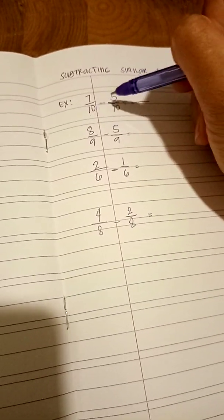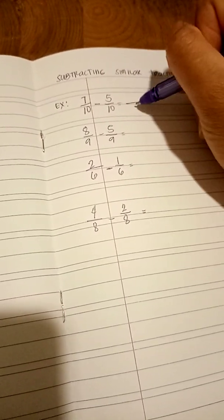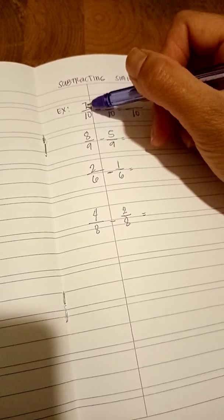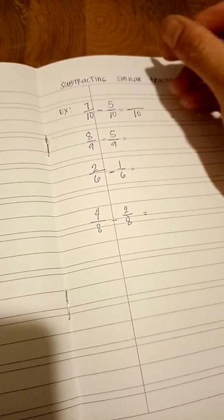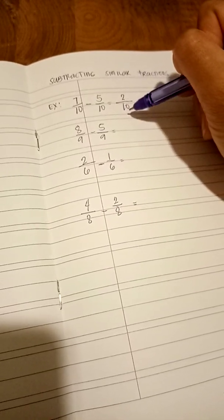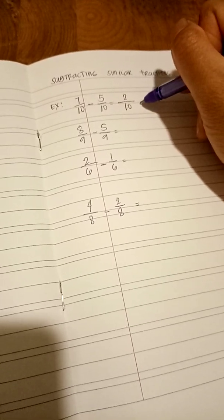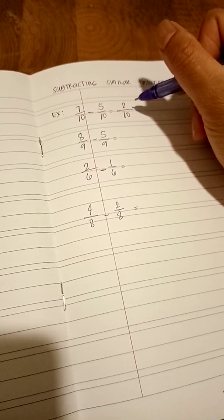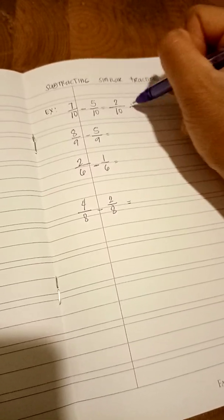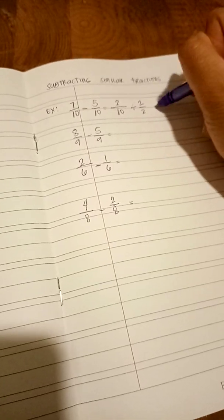7 over 10 minus 5 over 10. So, let's copy the denominator, which is 10. And 7 minus 5 equals 2. Can you simplify the 2 over 10? Yes, we can. By dividing the numerator and the denominator by 2. So, divided by 2, divided by 2.